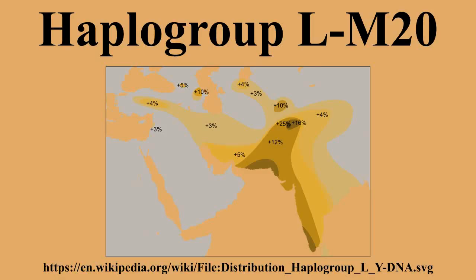Haplogroup L M20 is associated with South Asia. It has also been found at low frequencies among populations of Central Asia, Southwest Asia, and Southern Europe along the coast of the Mediterranean Sea. It is a descendant haplogroup of Haplogroup K M9 and is believed to have first appeared approximately 30,000 years ago. Gareth Henson, administrator of the Haplogroup T project at FTDNA, has theorized that both T and L originated in the Iraq-Iran region, and the branches of L all went in different directions.